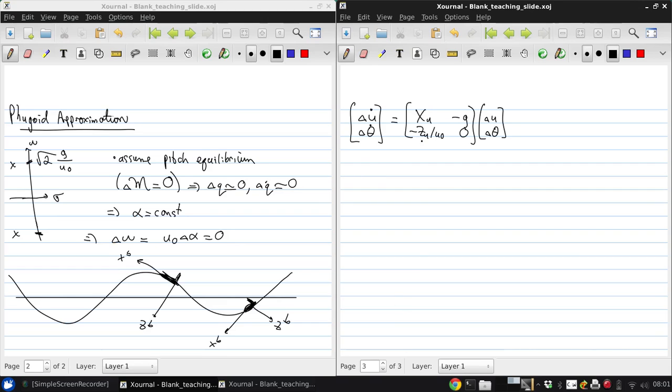And the eigenvalues of this matrix, this Jacobian matrix are lambda one, two equals sigma Fugoid plus and minus I omega Fugoid, which is given by from the characteristic equation, one-half XU plus minus the square root of XU squared plus 4 times ZU over U0. This is just from the quadratic formula.